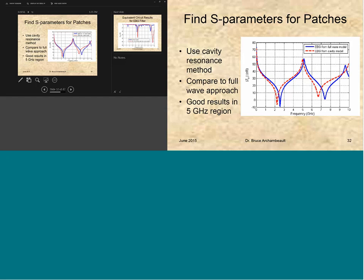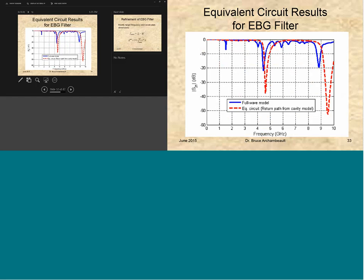And now what we can do is we can say, okay, if I look at the EBG filter versus what I'm getting for the simplified model, again, my target was 5 gigahertz. You see that the equivalent circuit model is giving me a notch a little bit higher in frequency than the full wave model did, but still overall pretty close. So for the simplified thing we're doing here.